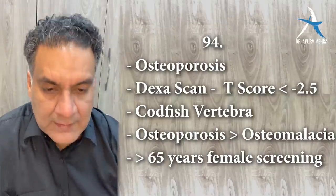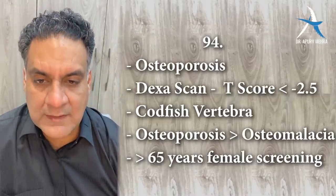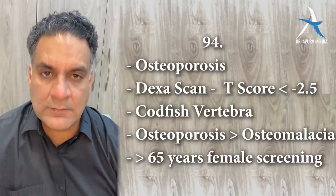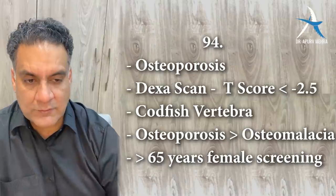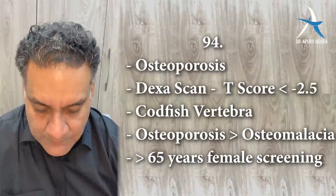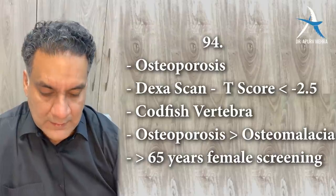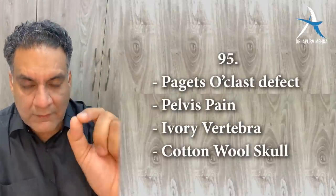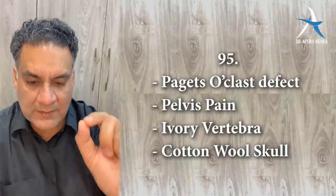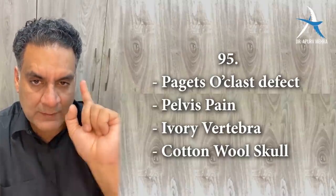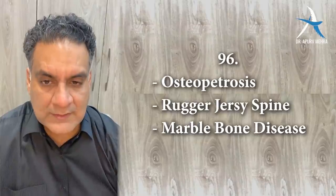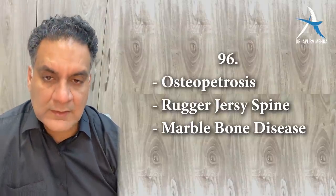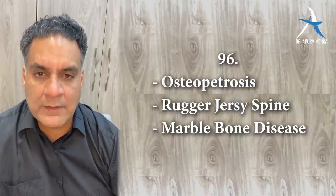Point number ninety-five: Paget's disease is an osteoclast defect. The pelvis is the most commonly affected bone; pain is the commonest symptom. Ivory vertebrae and cotton wool skull are seen in Paget's. Point number ninety-six: osteopetrosis is again an osteoclast defect — you have rugger jersey spine and absence of the medullary canal, giving a marble bone appearance. Point number ninety-seven: osteogenesis imperfecta is a collagen type 1 defect.